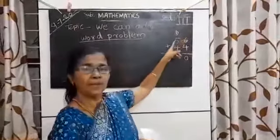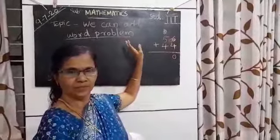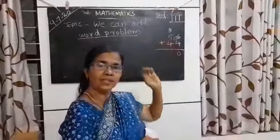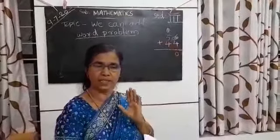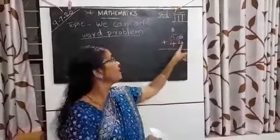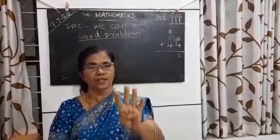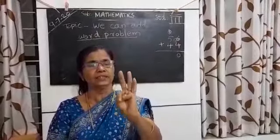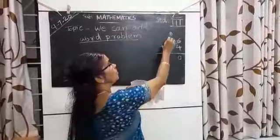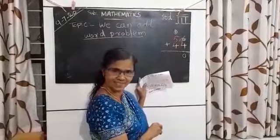Then, 5 plus 4 or 4 plus 5—both are the same. As we did before, keep the bigger number in your mind. Keep 5 in mind, then take 4 in your hand: 6, 7, 8, 9. Don't forget to add the carry over also: 9 plus 1 equals 10.